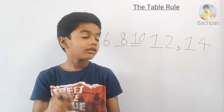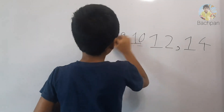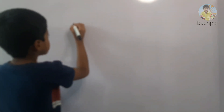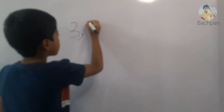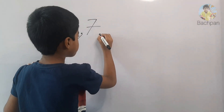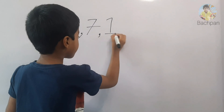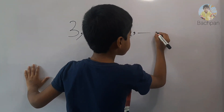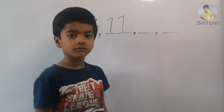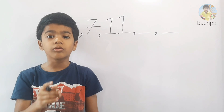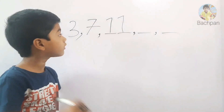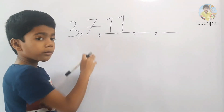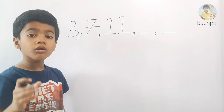Let's take another example. The series is: 3, 7, 11, dash, dash, 15. Rule number 1 — let's check the table rule. What is the first number in our series? 3. So let's recite 3's table: 3 ones are 3, 3 twos are 6. But there is no 6 in the series. So the table rule will not be applicable.